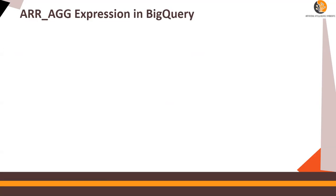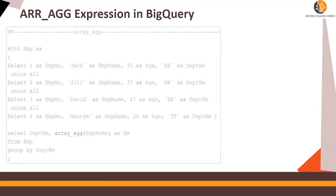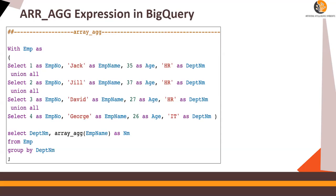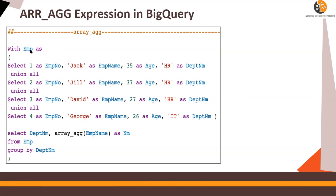ARRAY_AGG is an aggregation expression in BigQuery. There's a simple WITH employee statement — the same one used in our previous video — with employee numbers one through four, names Jack, Jill, David, and George, along with their age and departments. Using this, I want to create an array of employees which belong to the same department. Using the query, I'm creating a department name and arrays of employees which fall in the same department.